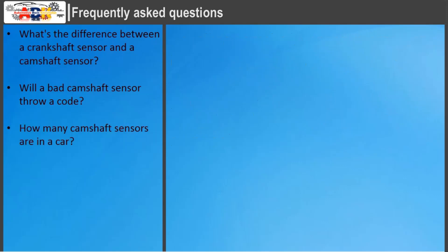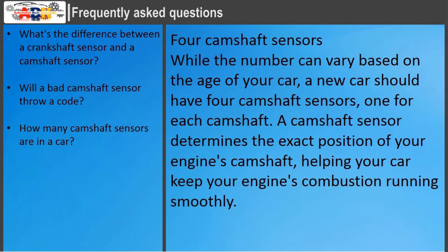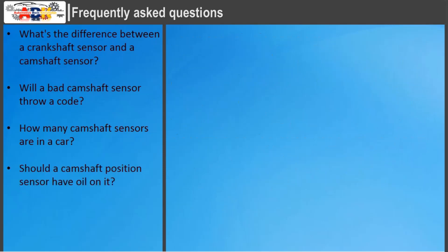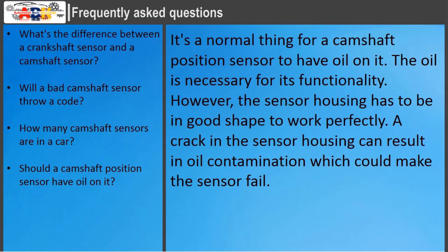How many camshaft sensors are in a car? While the number can vary based on the age of your car, a new car should have four camshaft sensors — one for each camshaft. A camshaft sensor determines the exact position of your engine's camshaft, helping keep the engine's combustion running smoothly. Regarding oil on the sensor: it is normal for a camshaft position sensor to have some oil on it, as the oil is necessary for its functionality. However, the sensor housing must be in good shape; a crack in the housing can result in oil contamination, which could make the sensor fail.